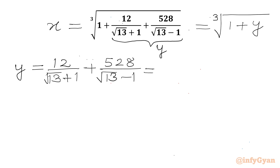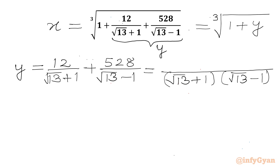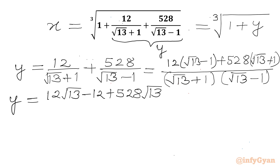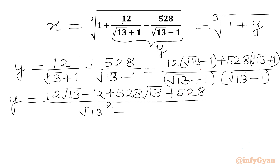Let's take LCM. The denominator will be square root 13 plus 1 times square root 13 minus 1. In the numerator I will get 12 times root 13 minus 1, plus 528 times root 13 plus 1. Now we will simplify. For the denominator we can use the difference of two squares formula: root 13 squared minus 1 squared.